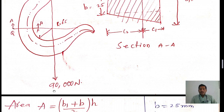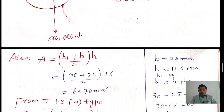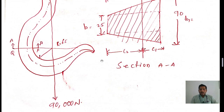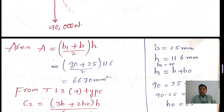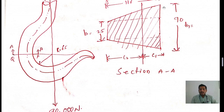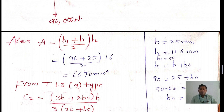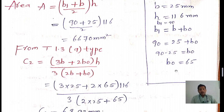Our main intention is to find the area of the trapezoidal section. Area = (b₁ + b) / 2 × h = (90 + 25) / 2 × 116 = 6670 mm². Next, we find bo: b₁ = b + bo, so 90 = 25 + bo, giving bo = 65.